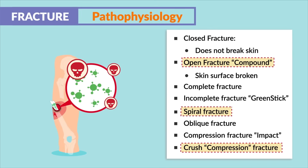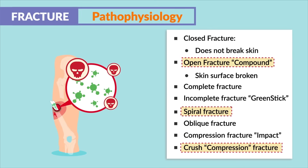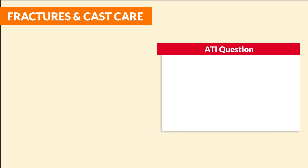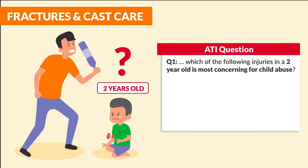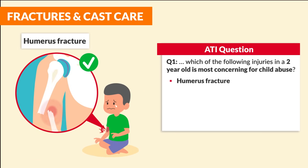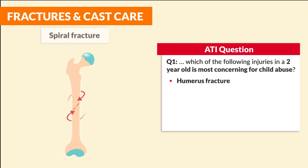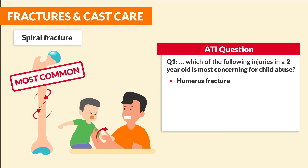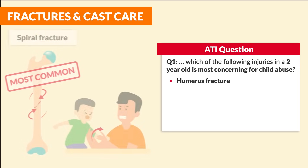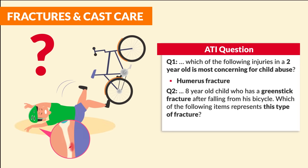ATI had two questions here. Question one: which of the following injuries in a two-year-old is most concerning for child abuse? A humerus fracture — yes, that broken long bone in the arm. Again, a spiral fracture is the most common type of fracture seen in child abuse due to the twisting of the arm.